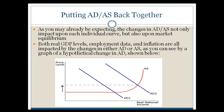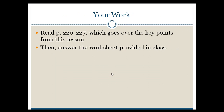Now that you know a little bit about aggregate demand and aggregate supply and how those curves change, you're going to have some homework. Your homework is going to look at how, if you start in a position where your economy is in full employment and something happens to either move your aggregate demand or aggregate supply curve, how will that change the overall level of performance within the economy? Go to pages 220 to 227 in your textbook — it will go over key points from the lesson. Then work on the worksheet titled 'Changes in Aggregate Demand and Aggregate Supply.' When you come back next day, I'll have a video posted where I'll talk about the answers and we can go over those together.